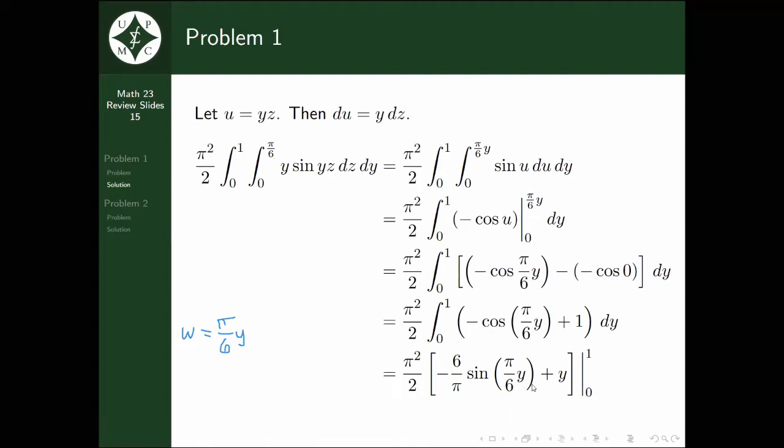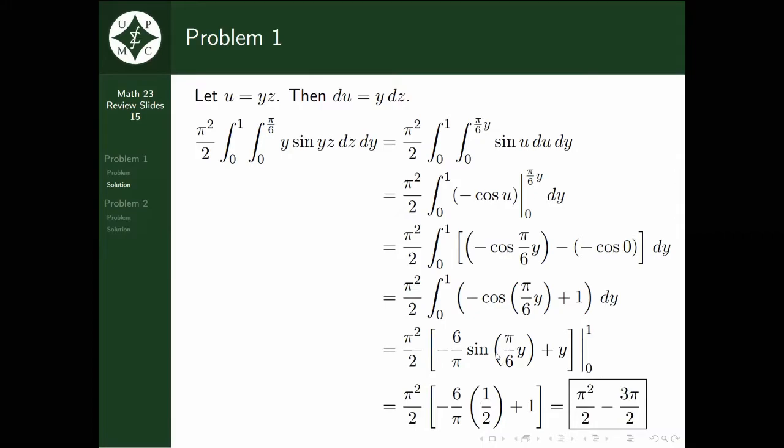Note that if y equals 0, this whole thing just zeroes out because sine of 0 is 0. So we just have to evaluate it at y equals 1. We should get π²/2 times -6/π sine(π/6) + 1. Remember that sine of π/6 is actually 1/2. Simplifying this expression, we get the answer π²/2 - 3π/2.